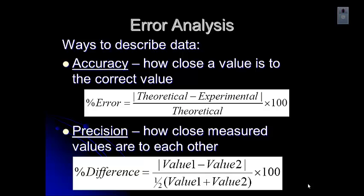You'll notice in the numerators of both equations there are absolute value signs — the vertical lines before and after. What that does is make the value inside positive. So if value one is smaller than value two, that would make a negative number on top of the percent difference equation, but the absolute value signs take the negative away and make it positive.